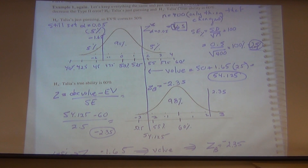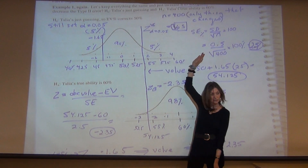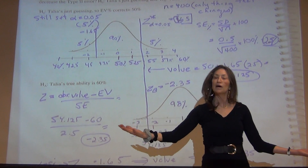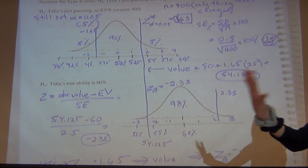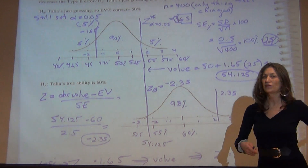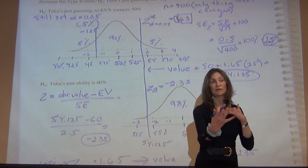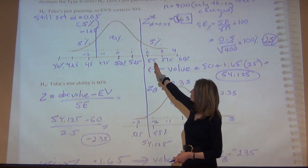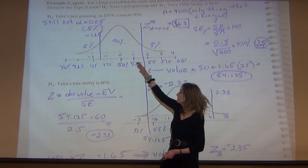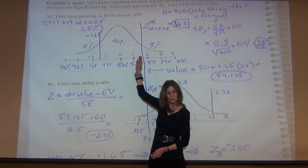A two-tail test would mean: let's say you're testing a new drug and you don't know whether it's going to be better or worse. You just think it's going to be different. When you have a two-tail test, you have a more stringent requirement — you need more evidence to reject the null, because you have 2.5% here and 2.5% there, so you need a higher z-score. You need more evidence to reject the null.